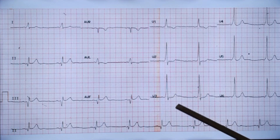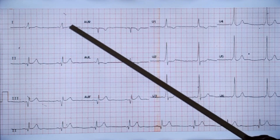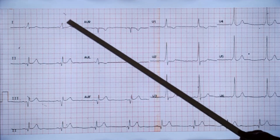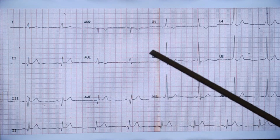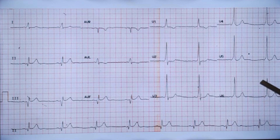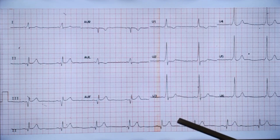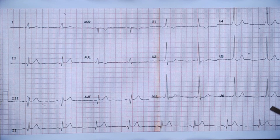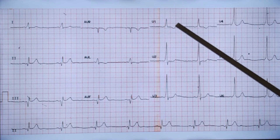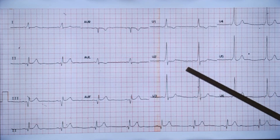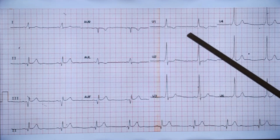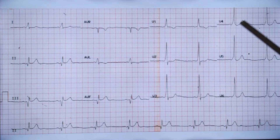This ECG could also resemble left bundle branch block because at one glance you might think this is left bundle branch block with a wide QRS and R wave in lead I. If the delta wave were a little more prominent you could mistake it for left bundle branch block. So WPW syndrome can be mistaken for infarction, bundle branch block, and since the voltage is high you may also think of left ventricular hypertrophy due to the tall R wave. Similarly, there is a tall R wave in V1 which might suggest right ventricular hypertrophy. So WPW can mimic hypertrophy, infarction, and many other conditions.